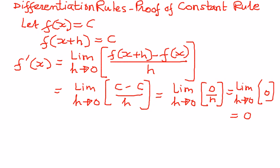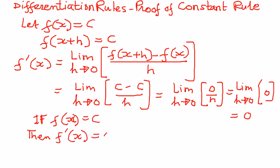We can then say that if f of x is a constant function, the first derivative is going to be equal to 0. We can also write it as d by dx of c, where c is a constant, equals 0. The derivative of a constant with respect to x is always equal to 0 — that is the proof of the constant rule.